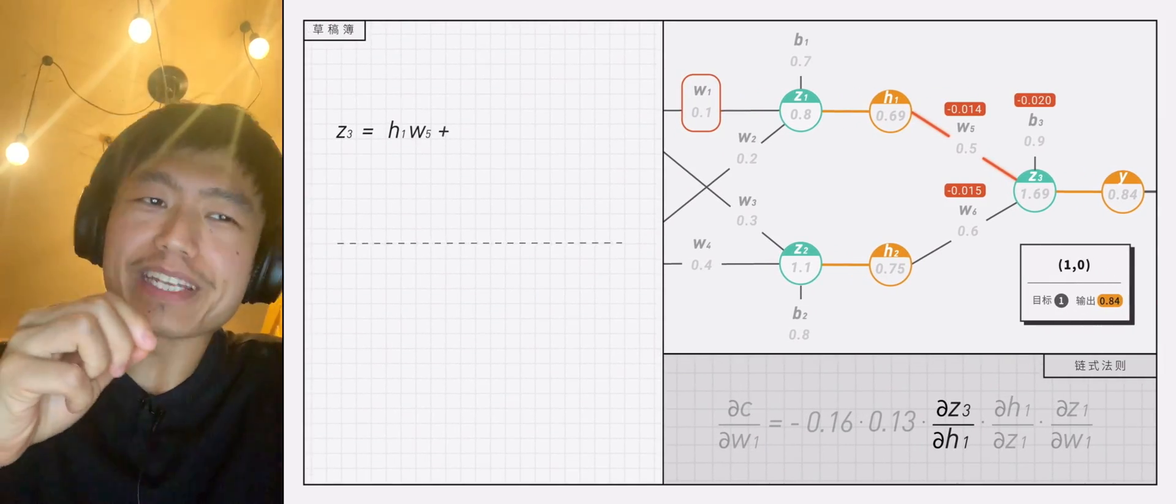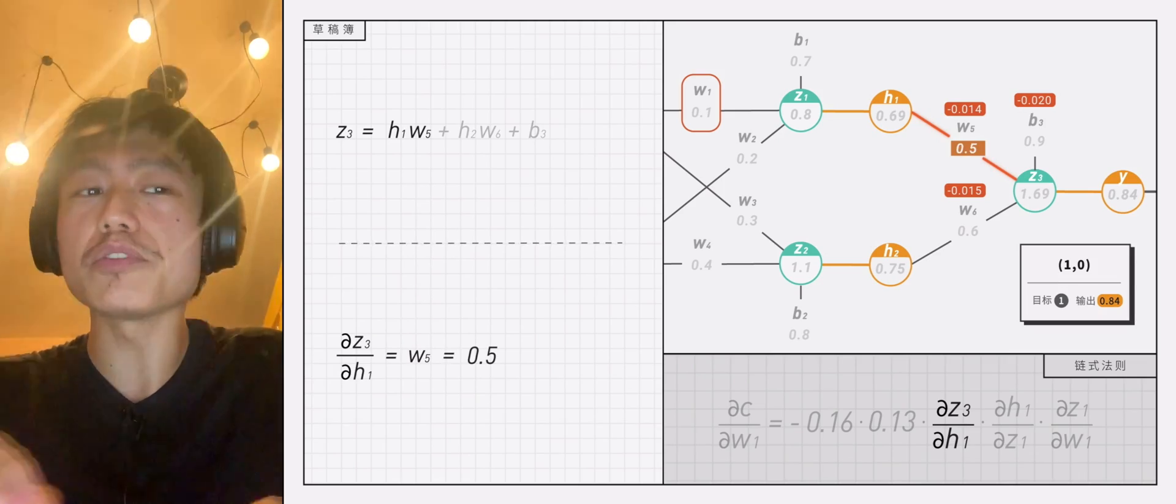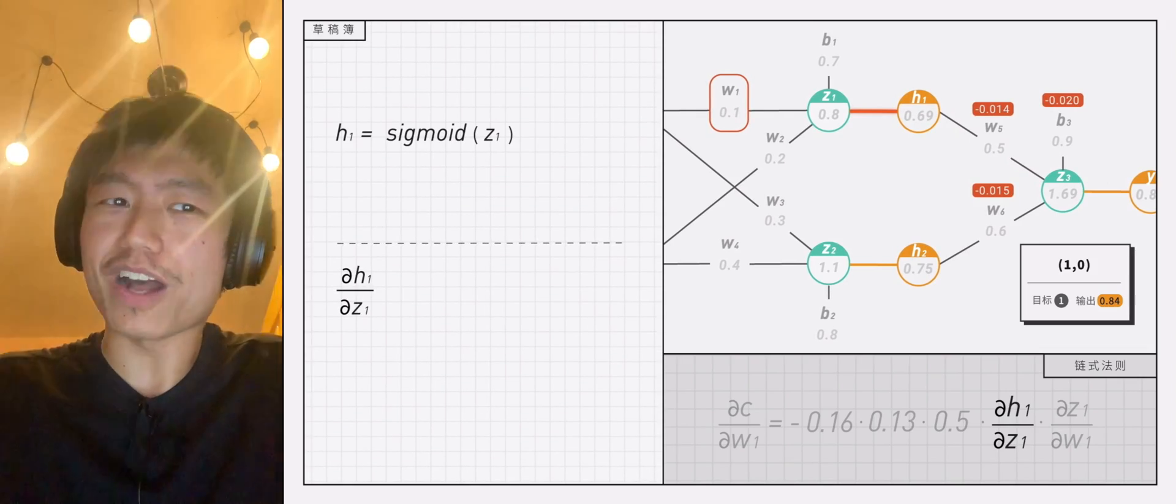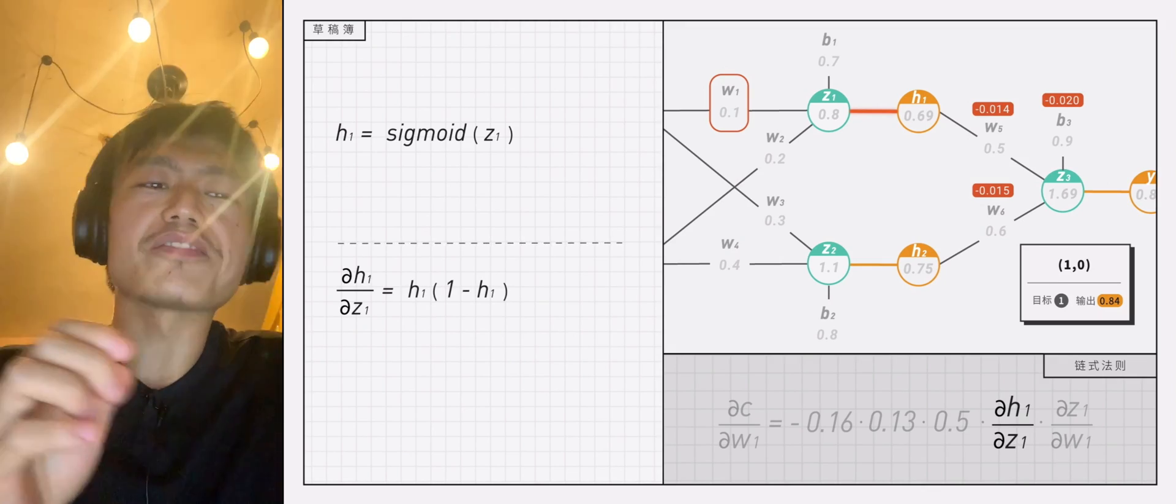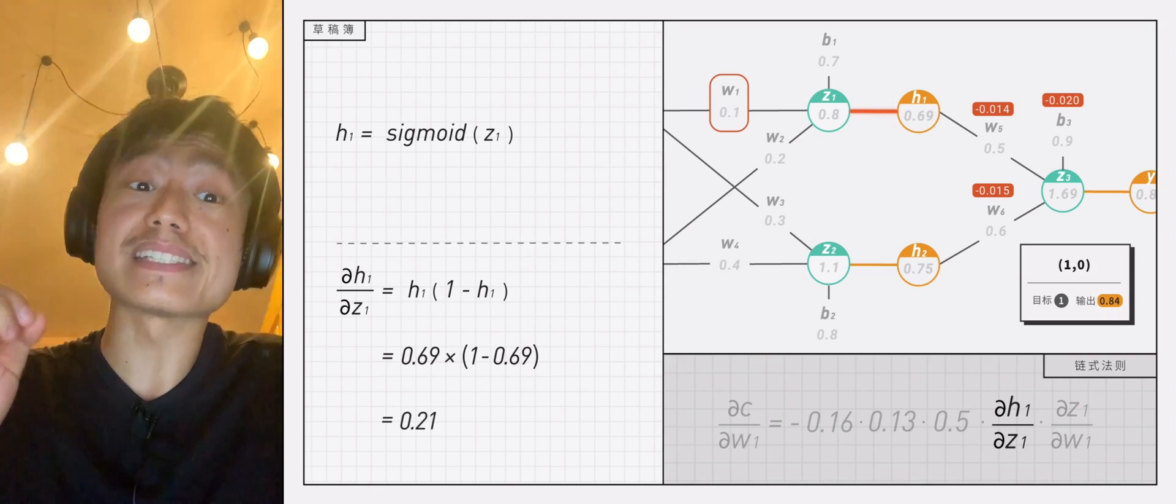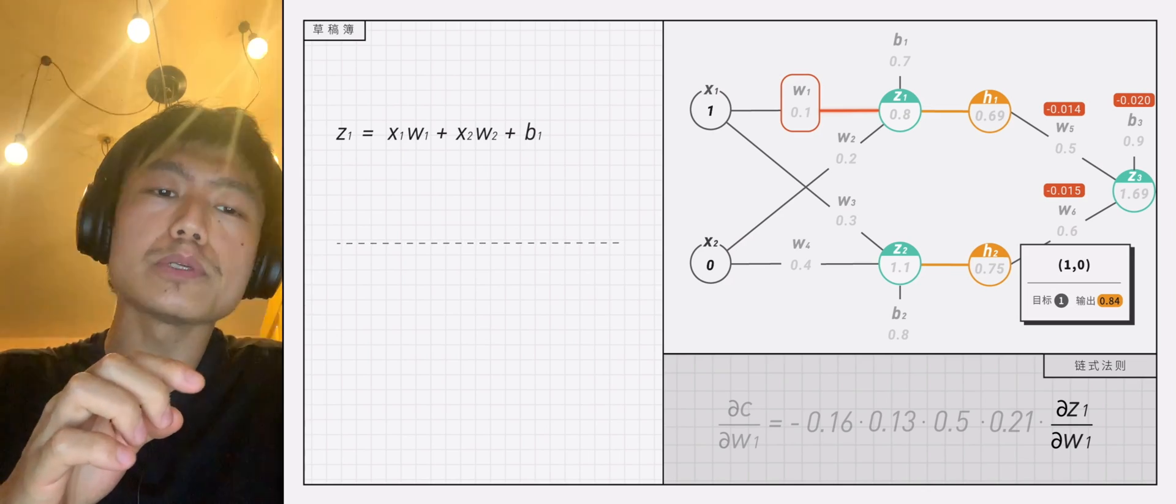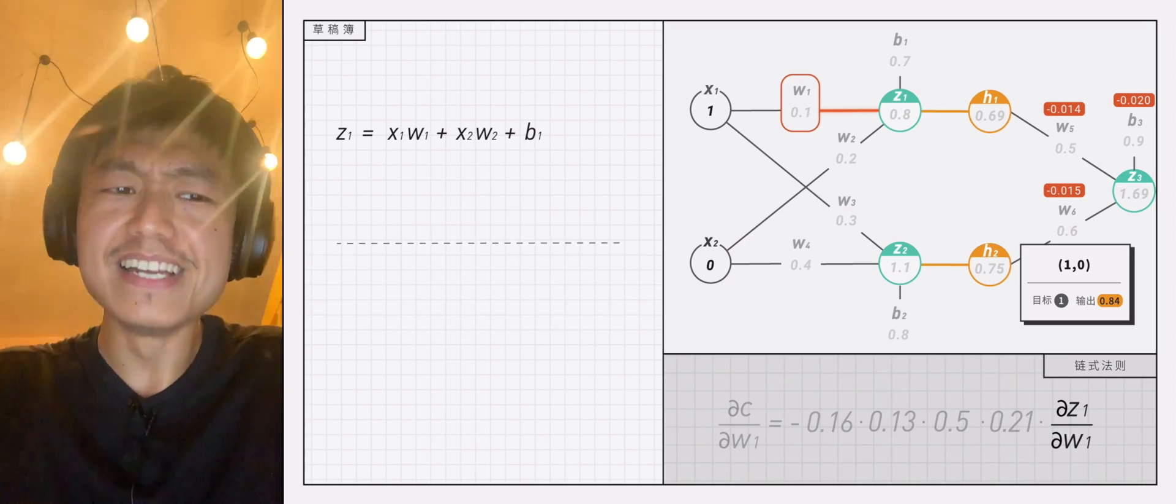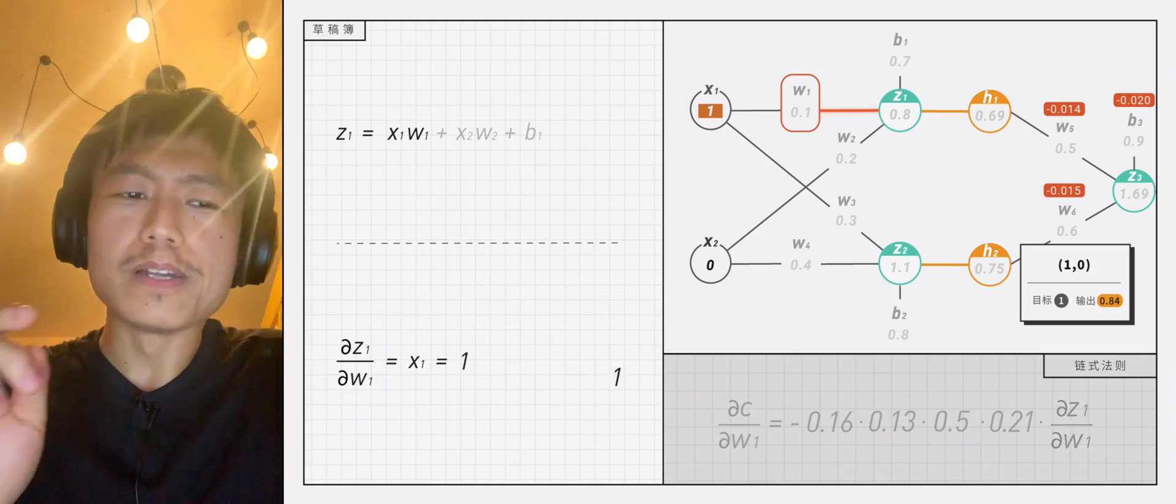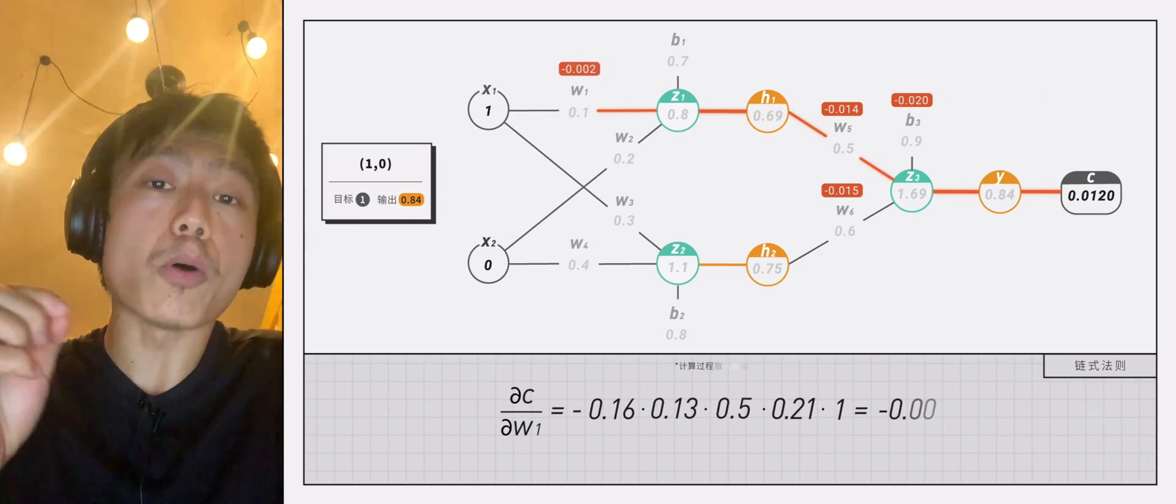According to z3 equals h1 times w5 plus h2 times w6 plus b3, the partial derivative is w5, which is 0.5. In the fourth item, the relationship between h1 and z1 is actually sigmoid. So the derivative is h1 times 1 minus h1 equals 0.69 times 1 minus 0.69 equals 0.21. According to z1 equals x1 times w1 plus x2 times w2 plus b1, the last term, dz1 divided by dw1 is x1, which is 1. So we can calculate that the partial derivative of c to w1 is equal to negative 0.002.